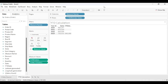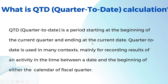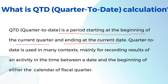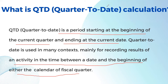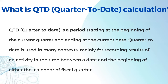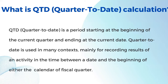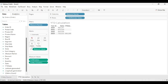Now let's look at QTD — Quarter to Date. QTD is a period starting at the beginning of the current quarter and ending at the current date. It is used to record the result of an activity in the time between the current date and the beginning of either the calendar or fiscal quarter, depending on the requirement. The calculation runs from the first day of the current quarter to today's date — that is QTD.